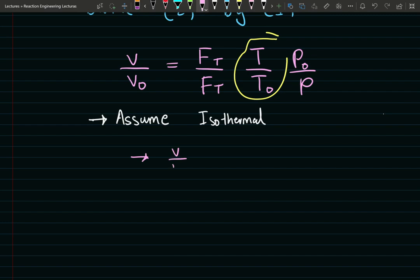V over V naught is equal to FT over FT naught. Remember, this FT is my exit molar flow rate and FT naught is my inlet total molar flow rate, total everything combined, P naught over P. Now the temperature ratio became equivalent to one because there was no change in temperature.